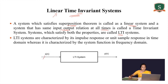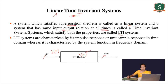A system will have input x(n) and output y(n), and the characteristics of the system are represented by the variable h(n), where h(n) is known as the impulse response of the system. The impulse response means the input will be the impulse function delta(n), and the output of such a system with input delta(n) is known as h(n), the impulse response.